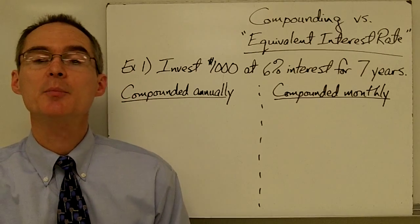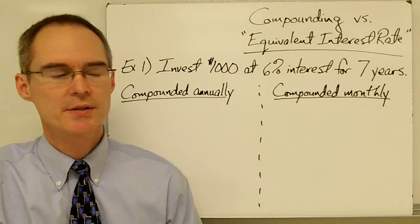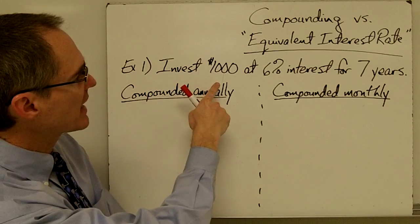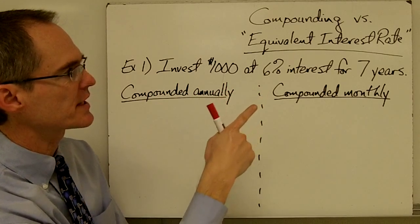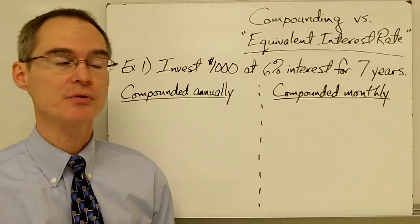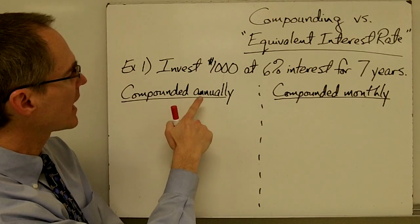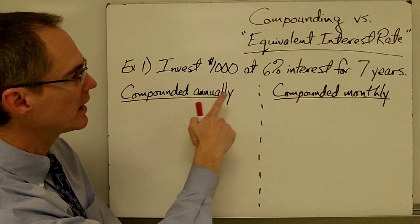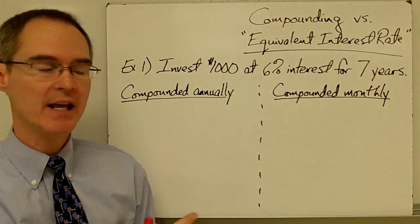In this video I'm going to look at a couple of problems involving interest rates. The first problem: I'm going to invest a thousand dollars at six percent interest for seven years, and I want to know how much money I'm going to have after seven years. I'm going to work this problem two different ways — compounding annually and compounding monthly — and I'm going to get two different answers.